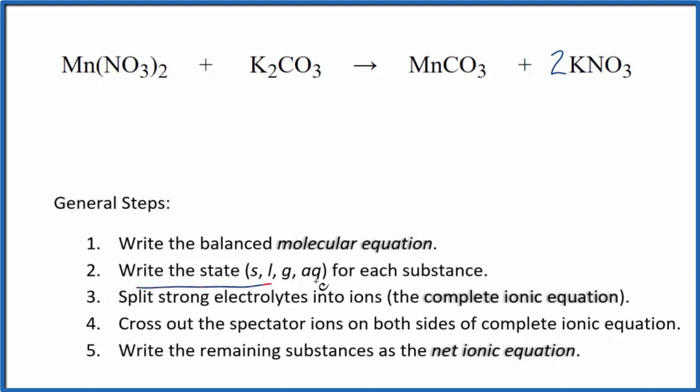Now we need to write the state for each substance. If you know your solubility rules, nitrates are very soluble, so this will be aqueous, dissociate into its ions. Potassium compounds are also very soluble, even though carbonates in general aren't. But this potassium here tells us this will be soluble as well.